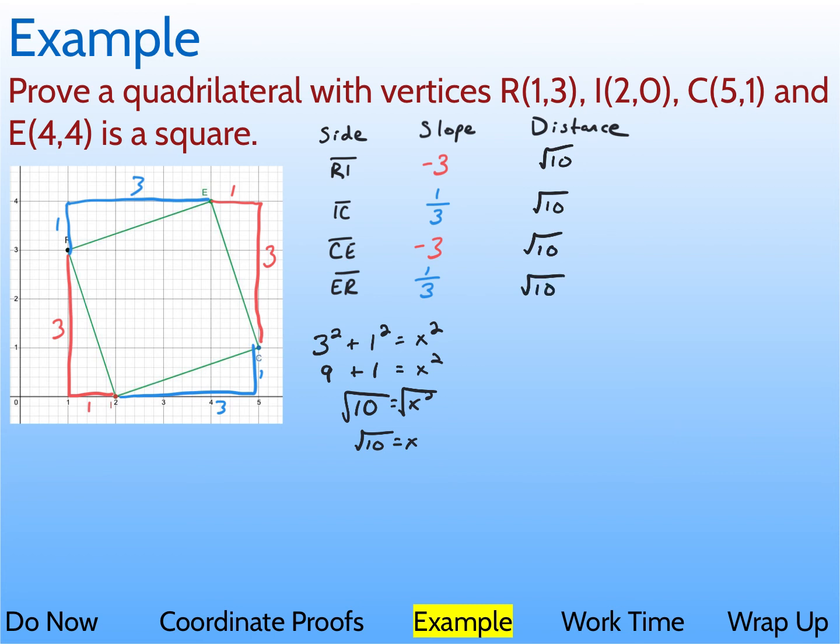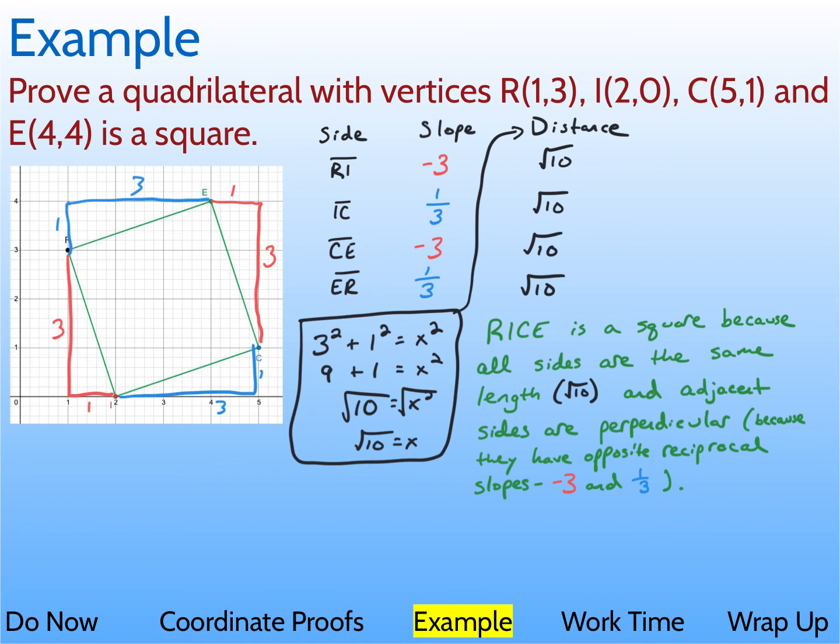So we've done all the math we need to do now. Now we just need to write a sentence that explains it. First, I'm just going to box this up and give a little arrow, just in case. So, let's write that sentence explaining why RICE is a square. So my sentence said, RICE is a square because all sides are the same length, radical 10, and adjacent sides are perpendicular because they have opposite reciprocal slopes, negative 3 and 1 third.